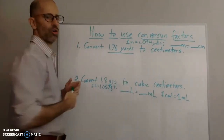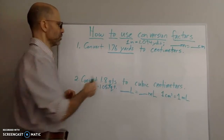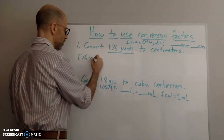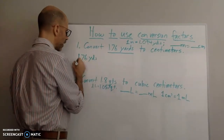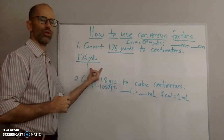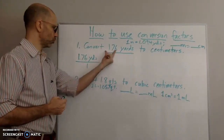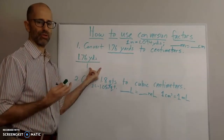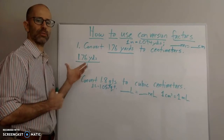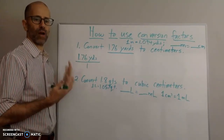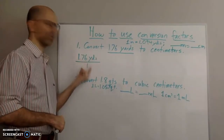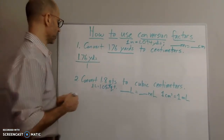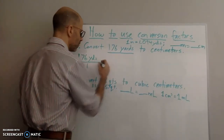So we know where we're going to begin and where we're going to end. You just start with the beginning — they give you 1.76 yards, so I'm going to write down 1.76 yards and I always put it over one. There's no unit on the bottom because you only have one unit and that unit goes with the number on top.